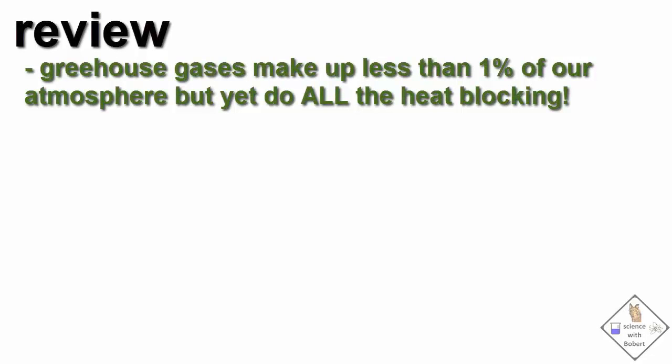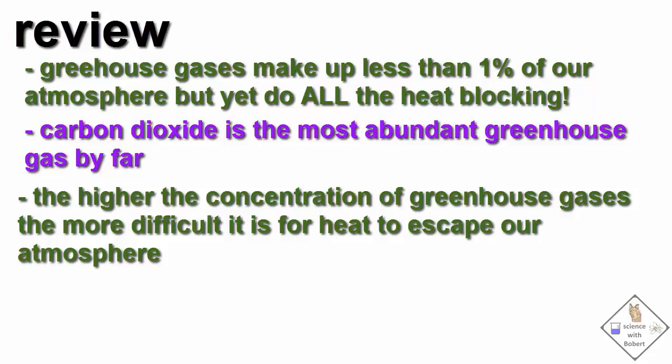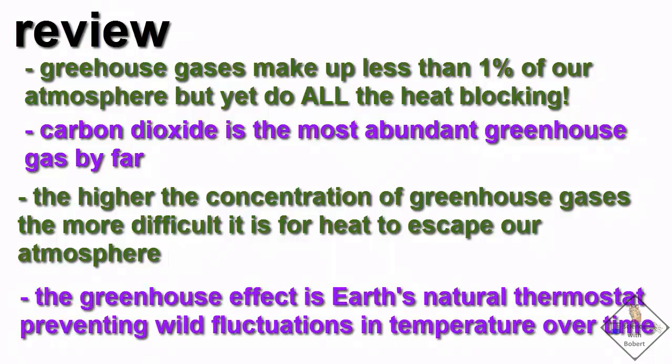Let's review. Greenhouse gases make up less than 1% of our atmosphere but are terrific heat blockers. Carbon dioxide is the most abundant greenhouse gas. Earth's greenhouse effect is similar to a pinball machine. The more greenhouse gases that are present in our atmosphere, the more heat is bounced around before escaping to outer space. Earth's greenhouse effect is like a thermostat that prevents wild swings in temperatures over geological periods of time. The thermostat setting corresponds to the concentration of greenhouse gases present in our atmosphere.